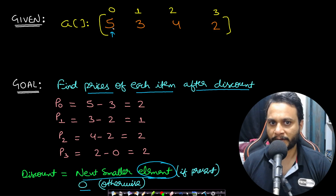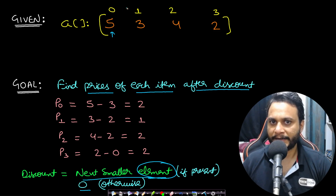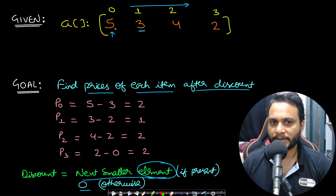For item at index 0 with price 5, we iterate from the next item to the end and find the first item less than or equal to 5. That is 3. So the discount is 3, and the final price for item 0 is 5 minus 3, which is 2.